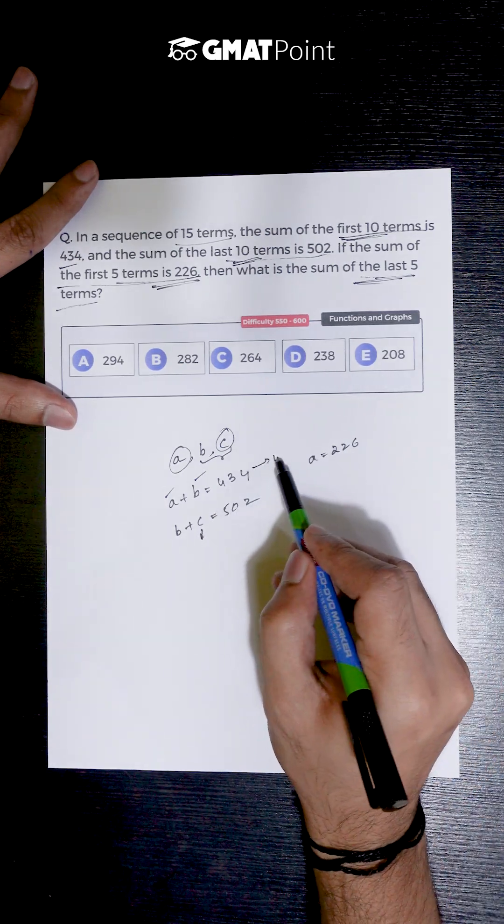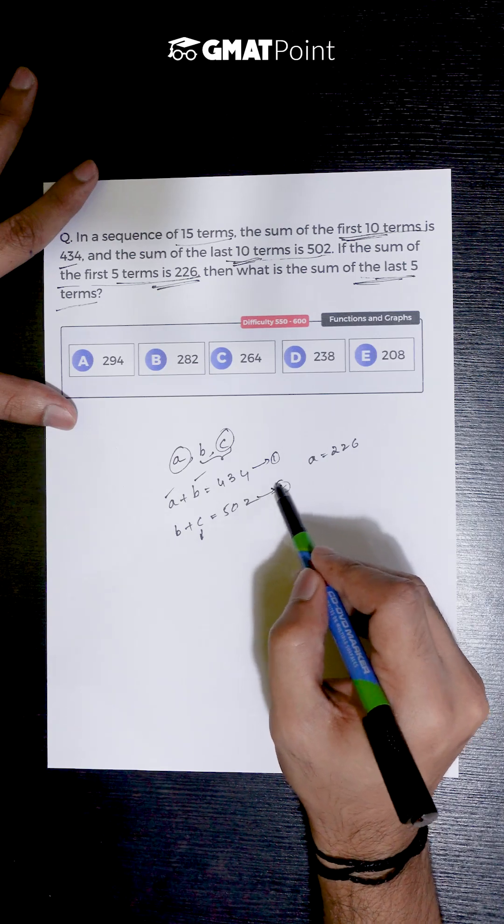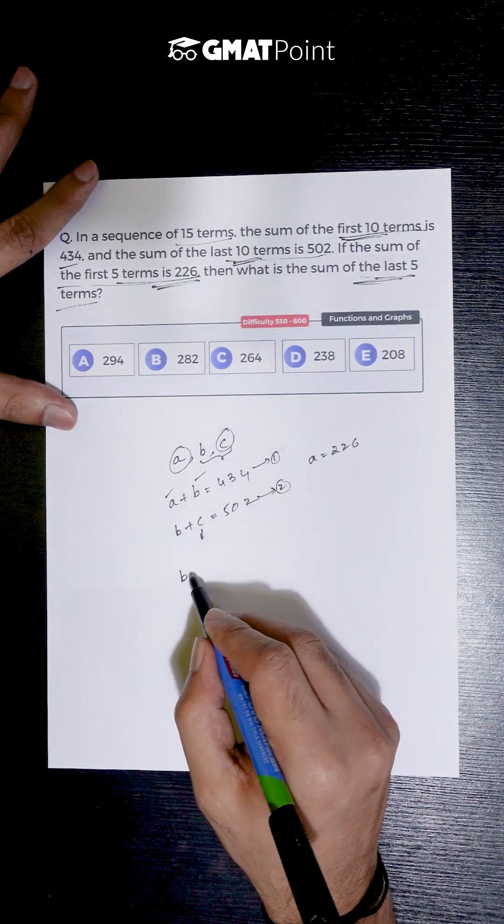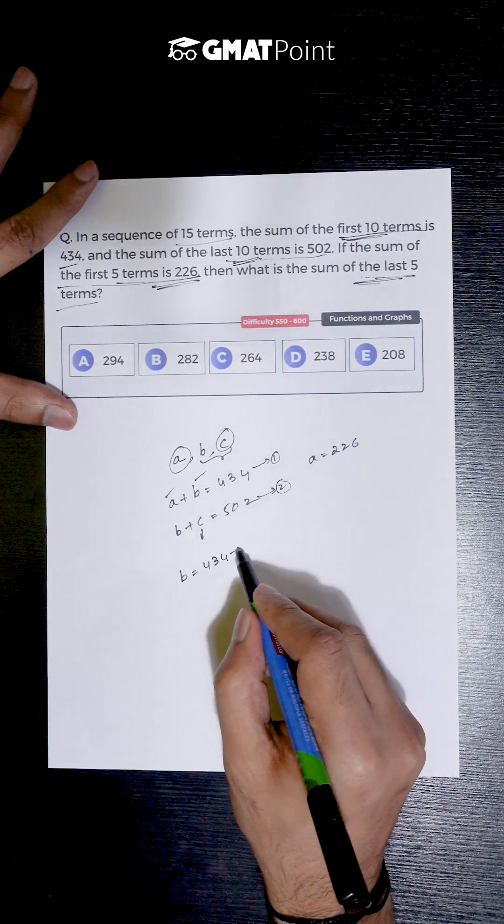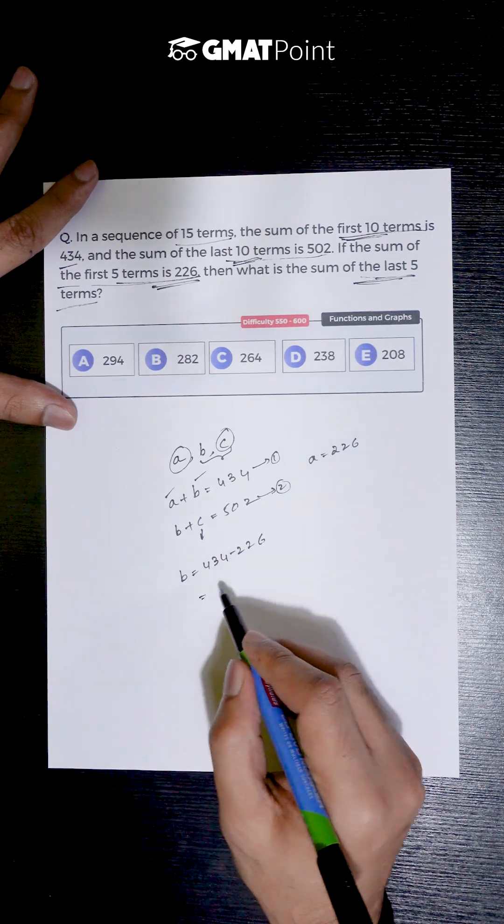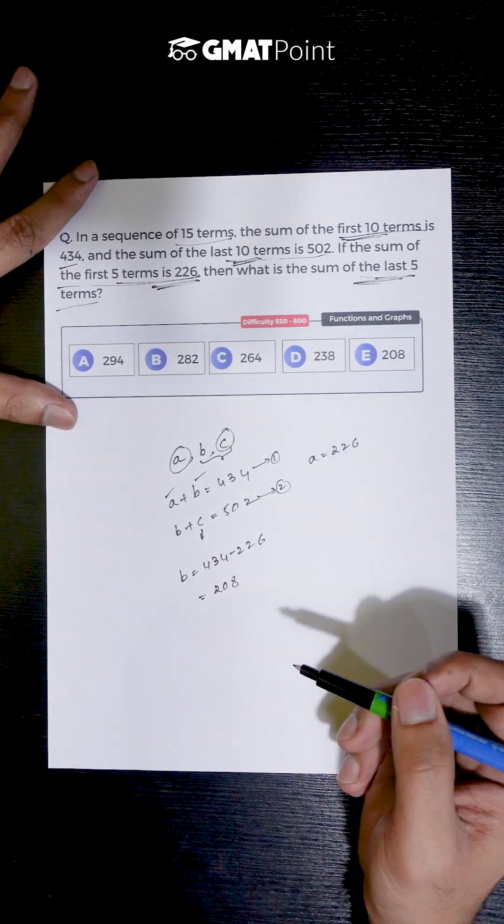So upon substituting the value of a in equation 1, we get the value of b to be 434 minus 226, which is nothing but 208.